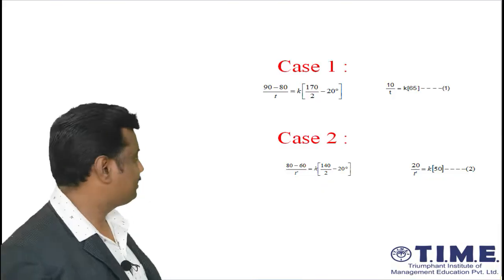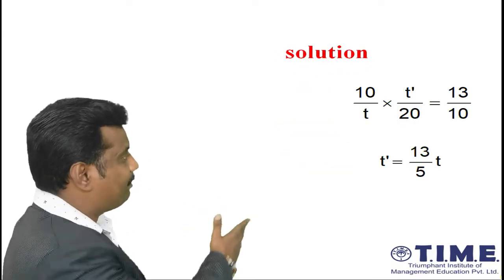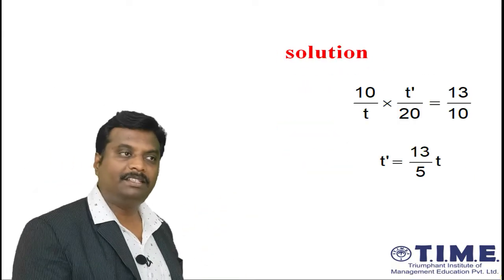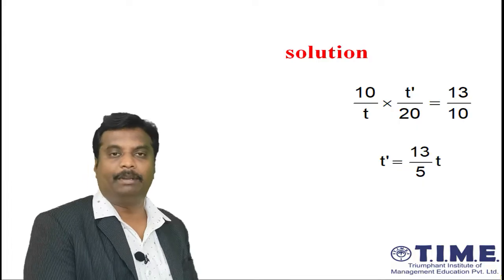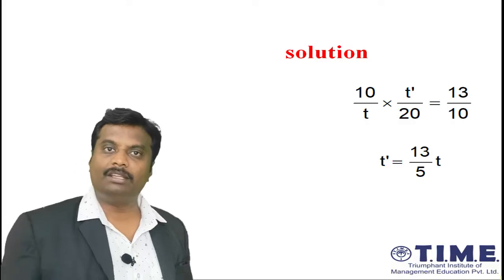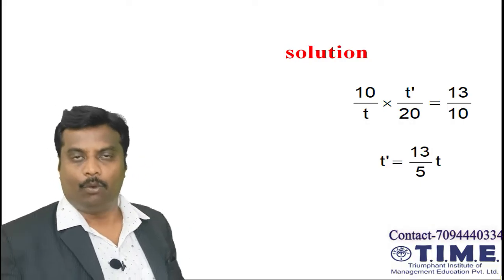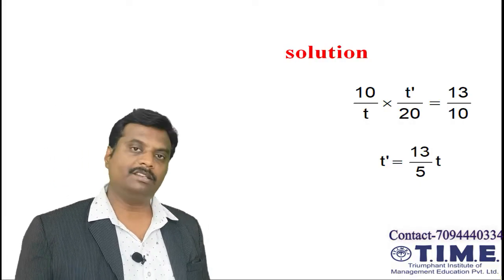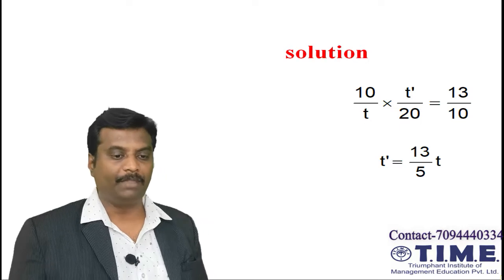Now equating both equations, we get the answer as t' = (13/5) × t. So this is the general way of doing it. But if you have limited time, I will tell you another way of doing it, because they're going to give you only 1 minute per question for 180 questions.